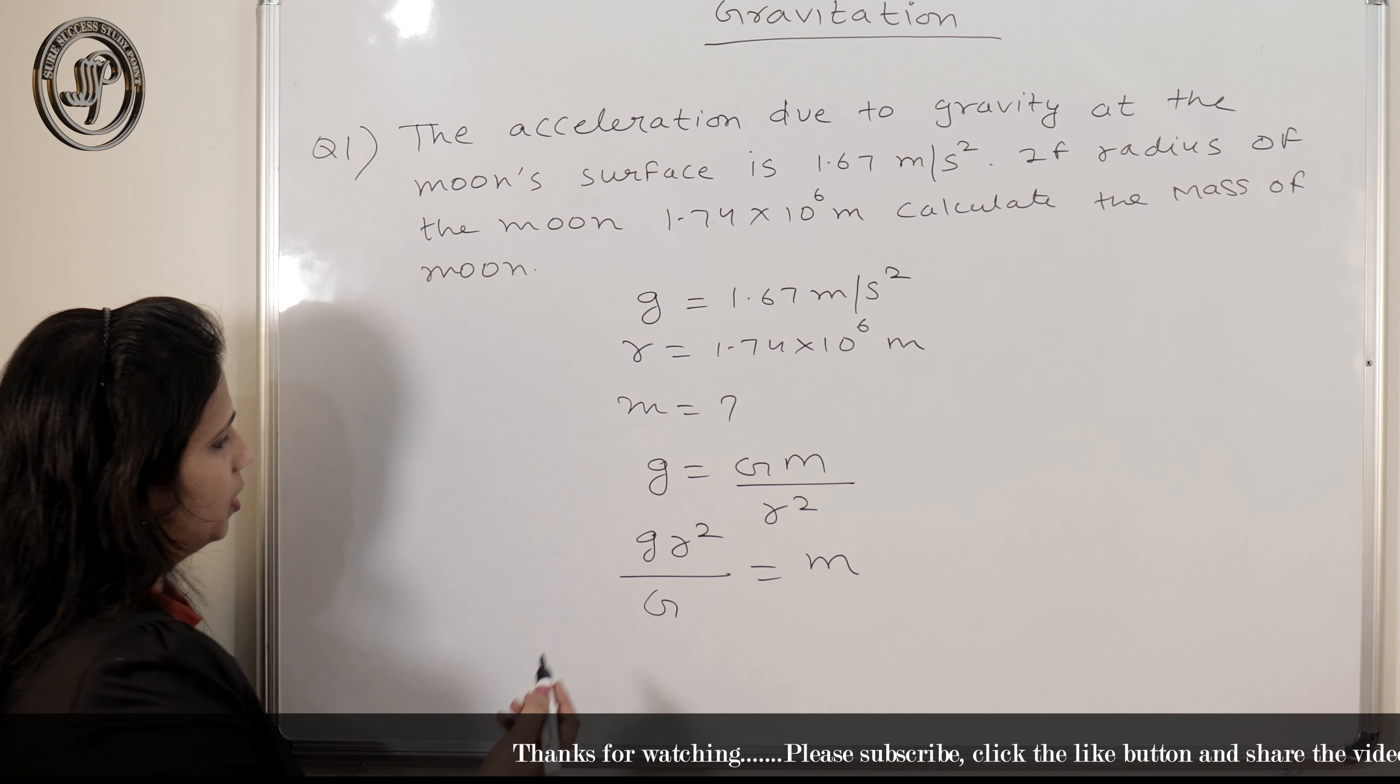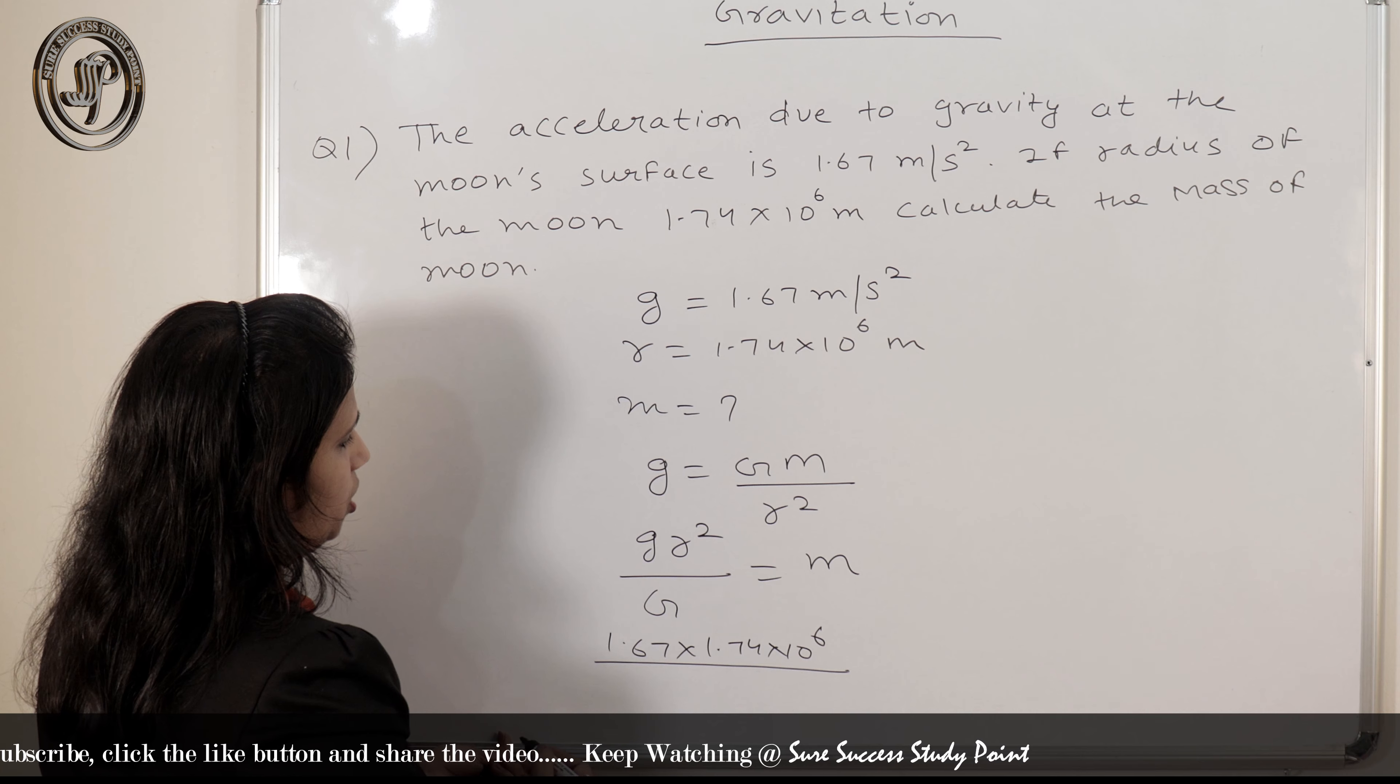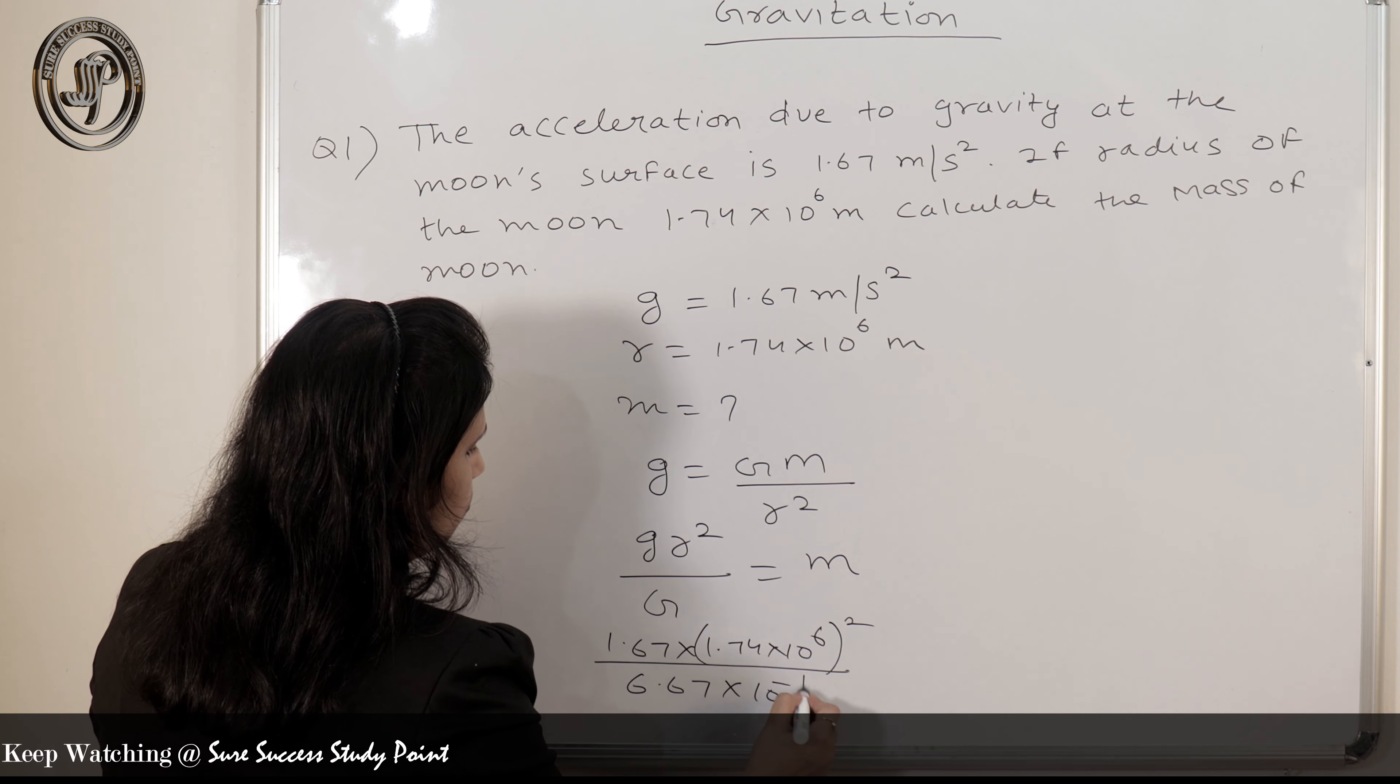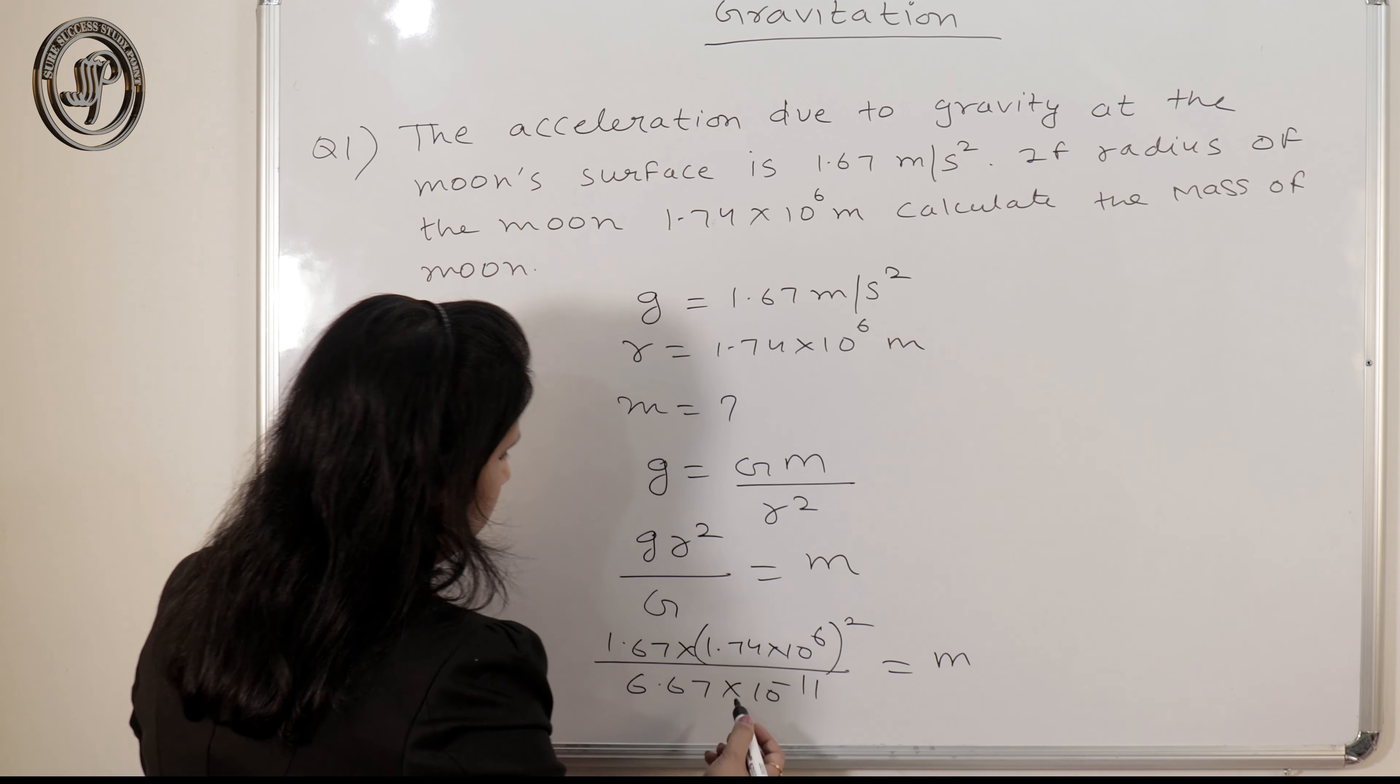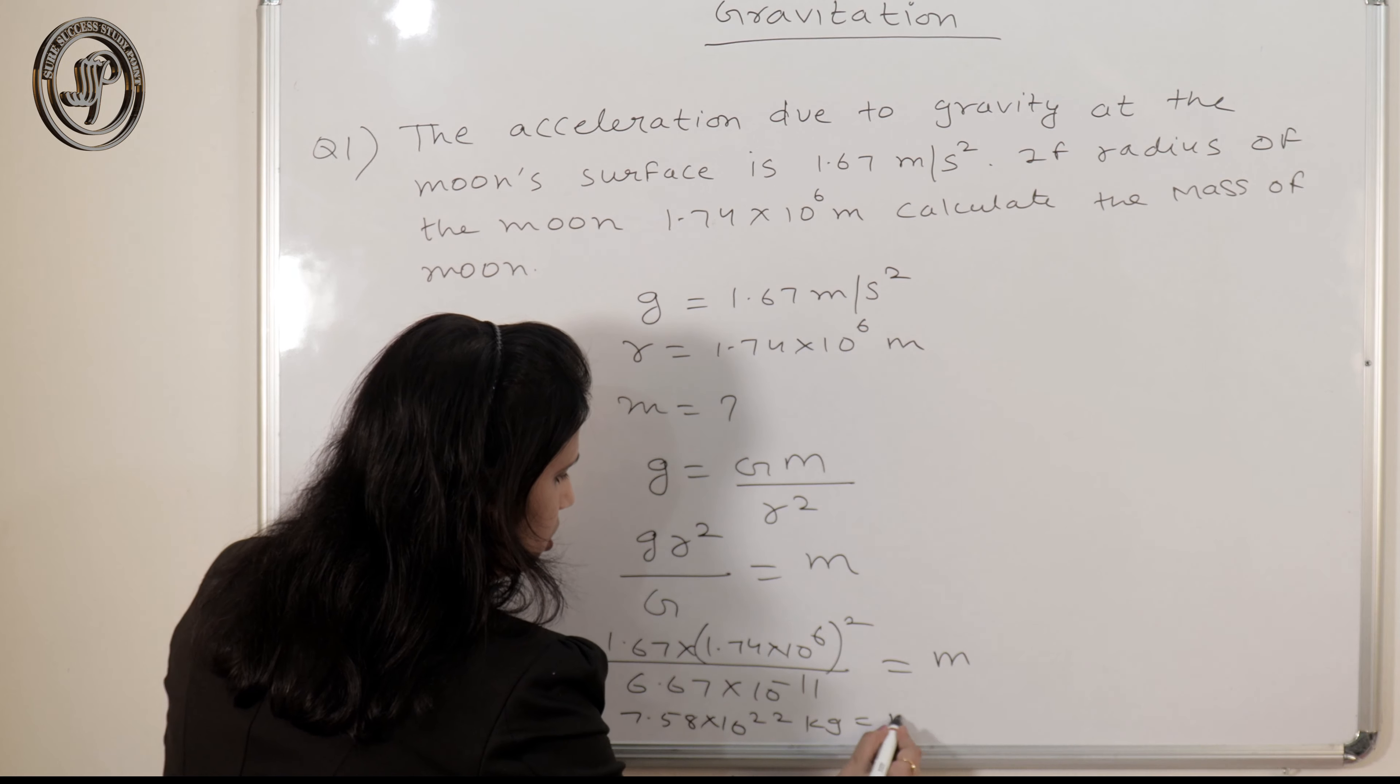We can calculate mass. So just substitute the value, we will get mass. So it is 1.67, the radius is 1.74 into 10 to the power 6, and this is squared. And the value of G is 6.67 into 10 to the power minus 11. So after calculating this, you will get the value of mass that will be approximately equal to 7.58 into 10 to the power 22 kg.